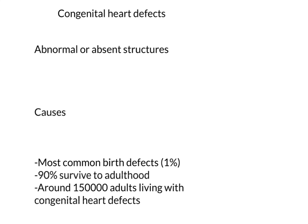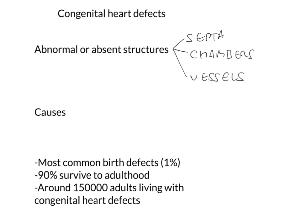In this video we're going to look at some of the commoner and more interesting congenital heart defects. We're going to start off making some general comments about this group of defects as a whole. They are typified by the presence of abnormal or absent structures within the heart — abnormal or absent septa, whether in the atria or the ventricles, abnormal or absent chambers, and abnormal or absent vessels.